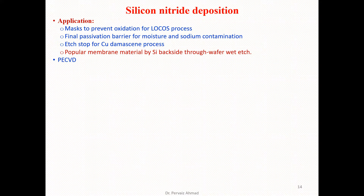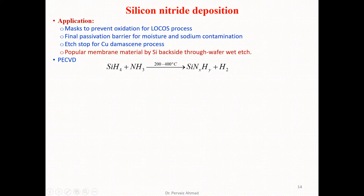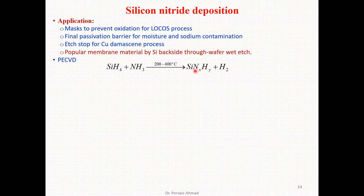Plasma enhanced chemical vapor deposition (PECVD) is utilized for the formation and synthesis of silicon nitride films. The reactions are carried out in an ammonia atmosphere at temperatures ranging from 200 to 400 degrees centigrade. As a result, we get silicon nitride along with hydrogen as a byproduct.